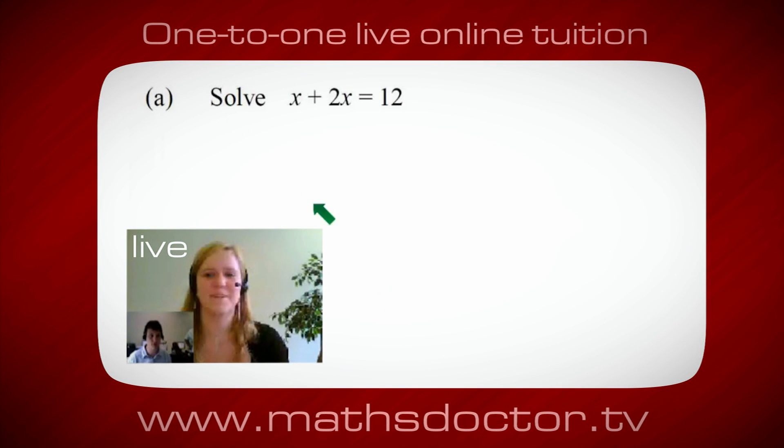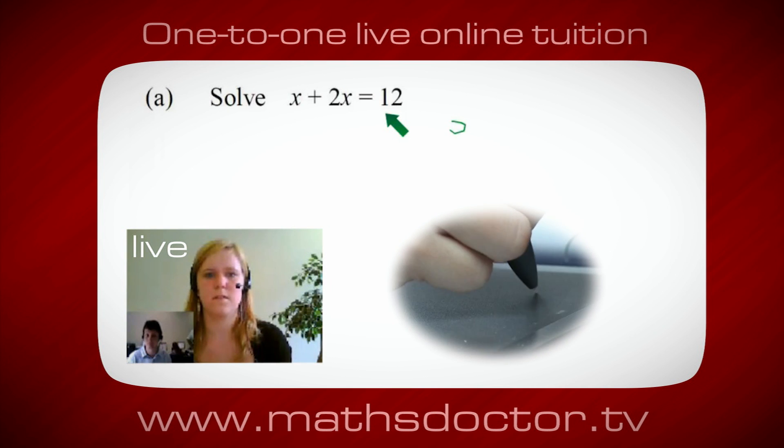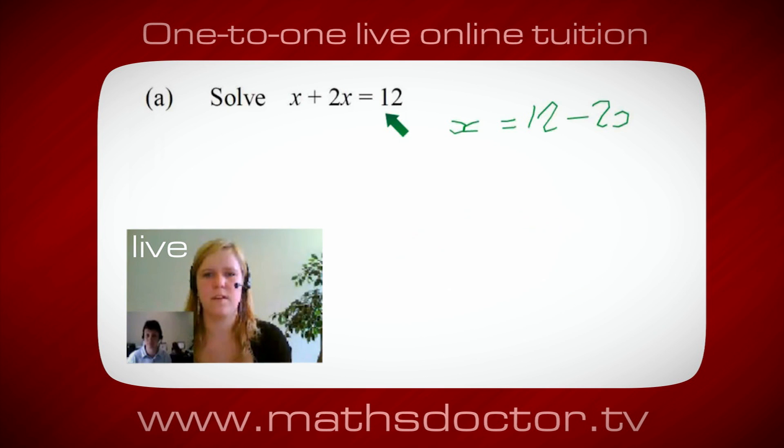Okay Marie, so let's have a look at this one. So solve x + 2x equals 12. So what do you think you do first? Okay, well I want x on its own, so I would put x equals 12 minus 2x.